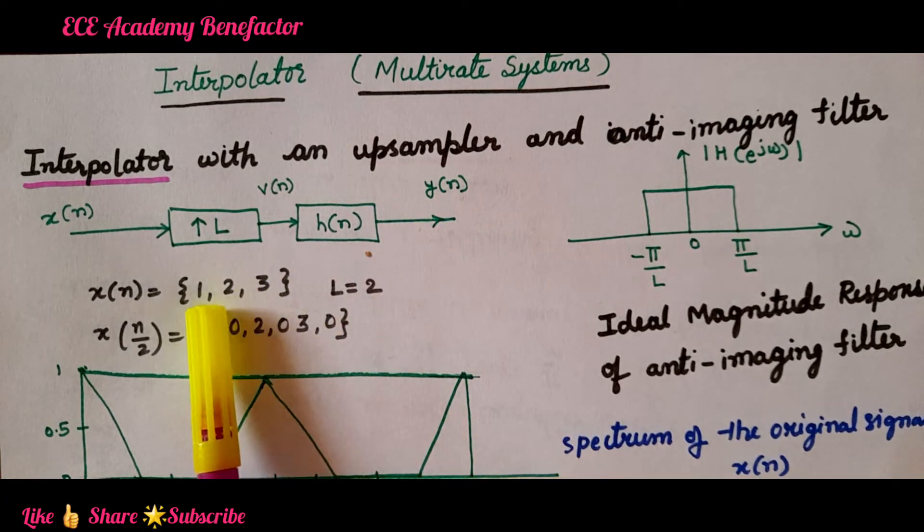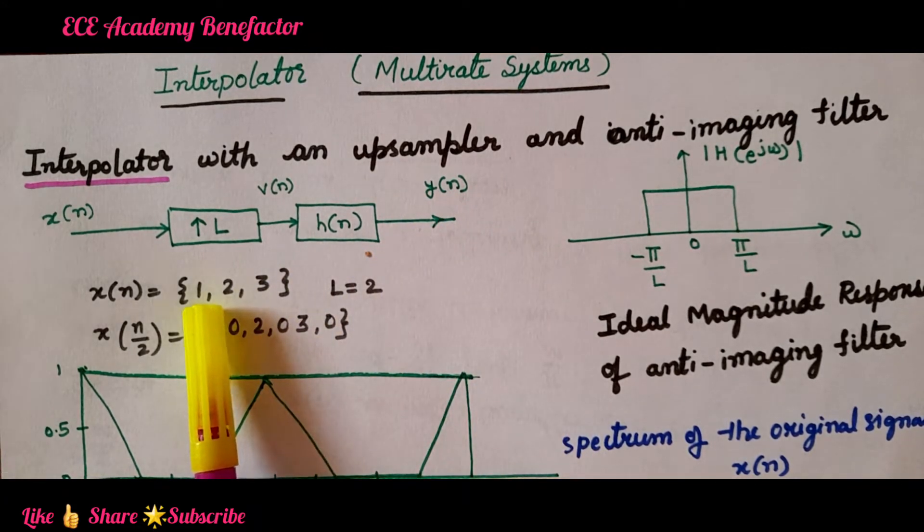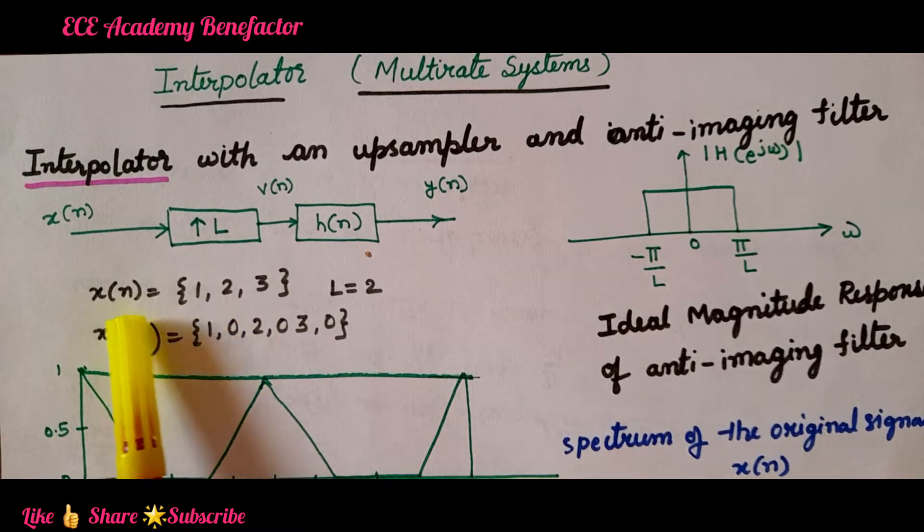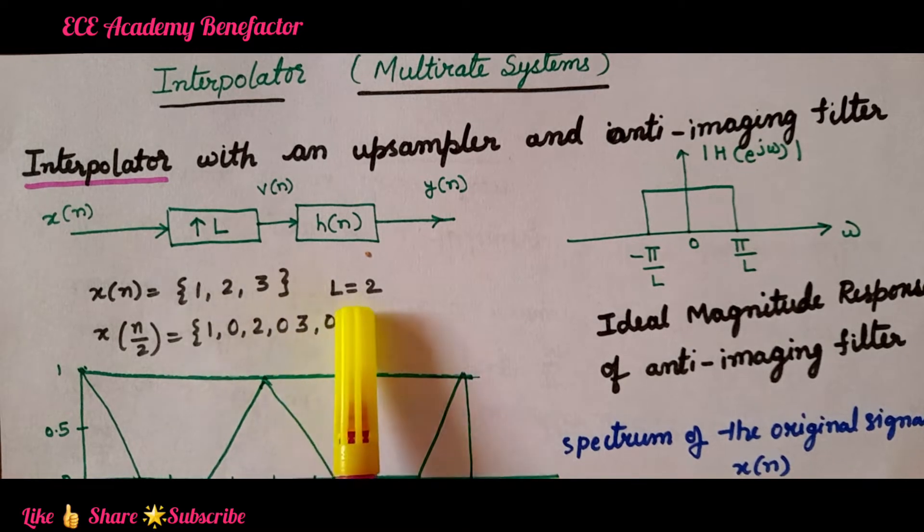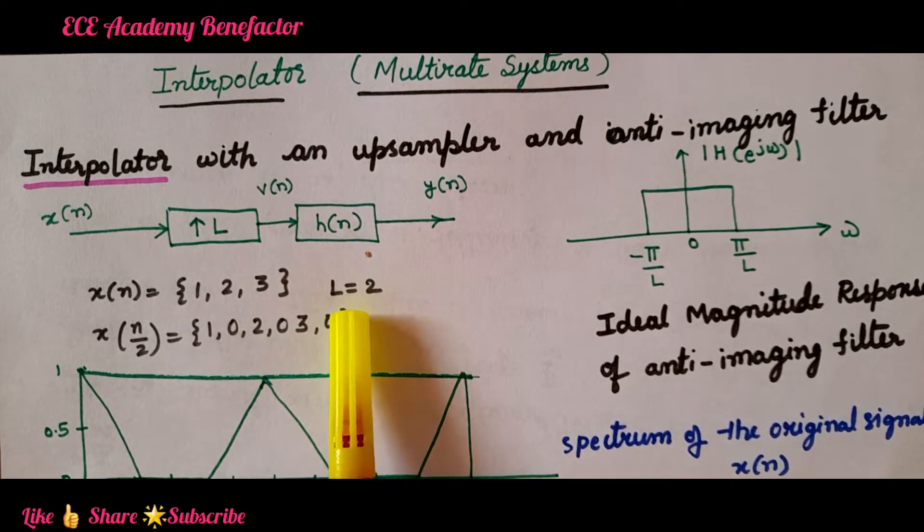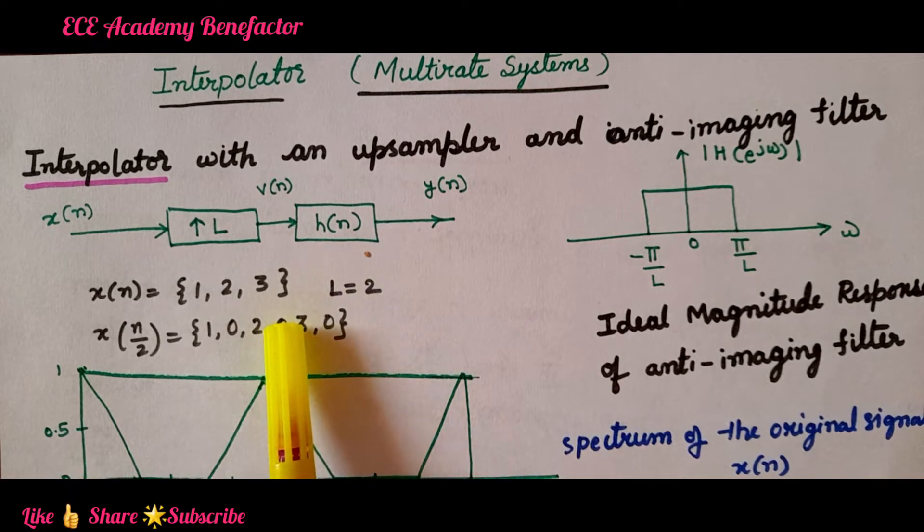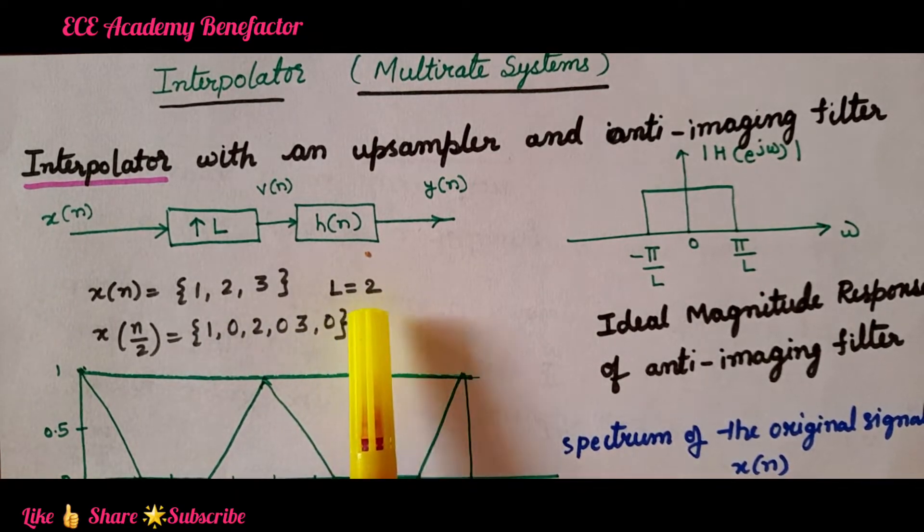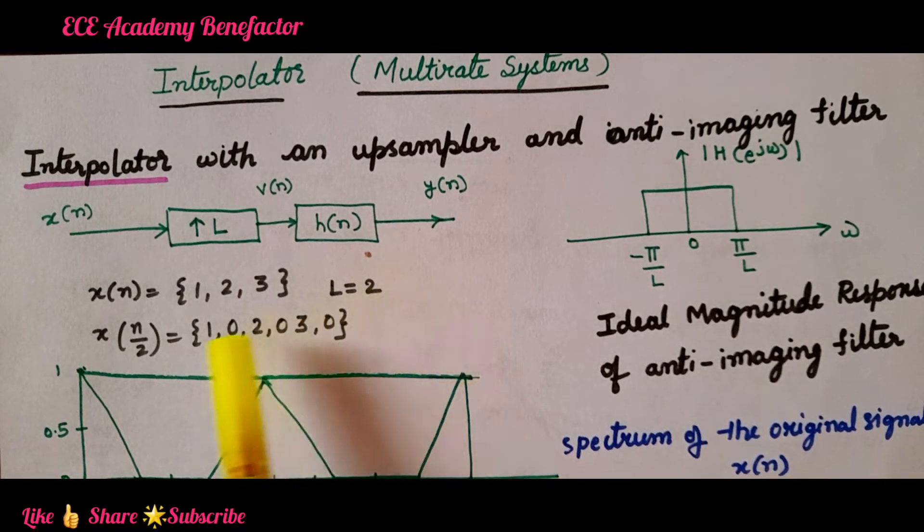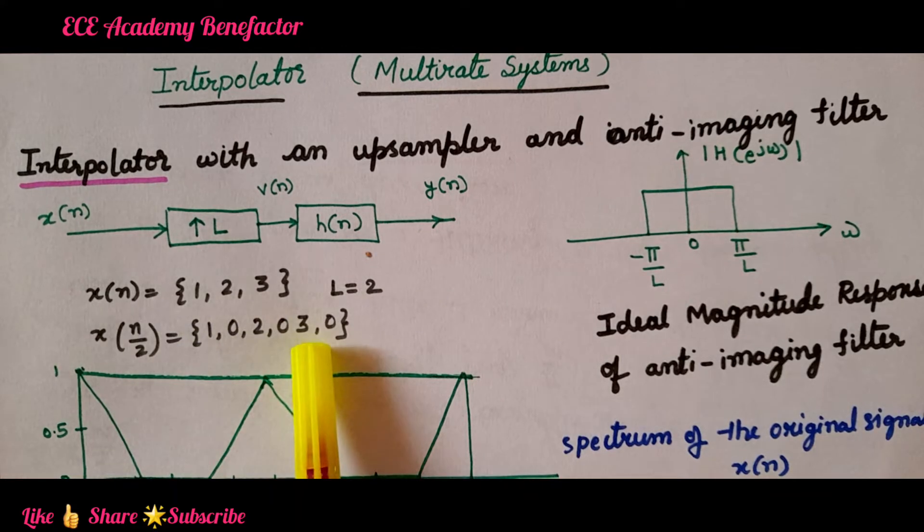How we do upsampling? Let us see one example. x(n) is given as 1, 2, 3 and here it is to be upsampled by a factor 2. In upsampling we insert zeros, L minus 1 zeros. L is 2, 2 minus 1 is 1, so we will insert 1 zero after every sample.